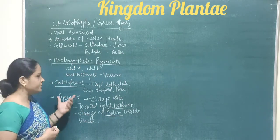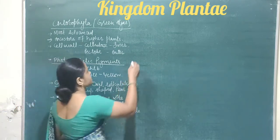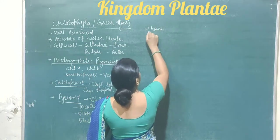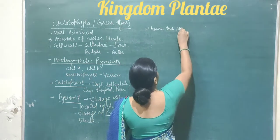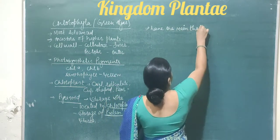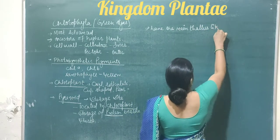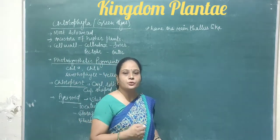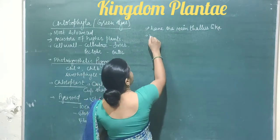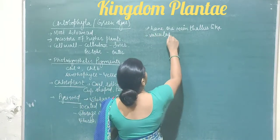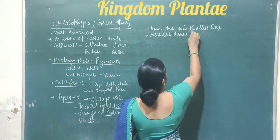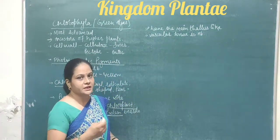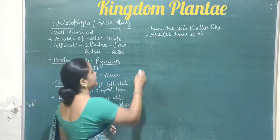The next feature of green algae is that they have a thallus-like structure, meaning the body is not differentiated into true stem, true leaf, and true root. The vascular tissue is absent — that is, xylem and phloem are not present in green algae.